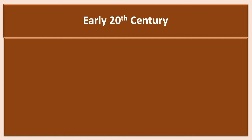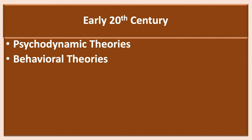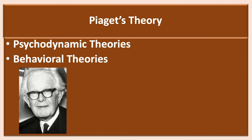In the early 20th century, psychology was dominated by two theoretical approaches: the psychodynamic theories of Freud, Adler, and Jung, and the behavioral theories of Watson, Thorndike, and Skinner. During that same period, Jean Piaget, who lived from 1896 to 1980, developed a theory of human cognitive development that did not become popular until the cognitive revolution of the 1950s and 1960s.